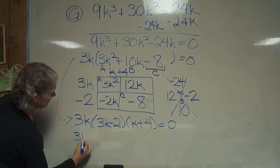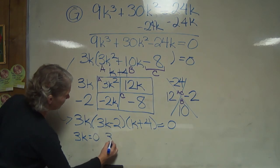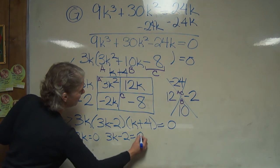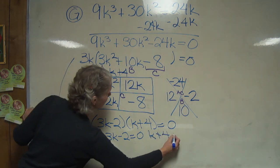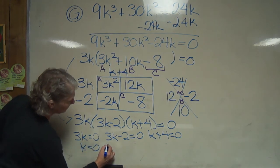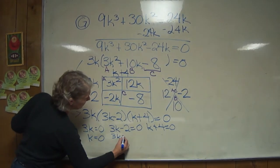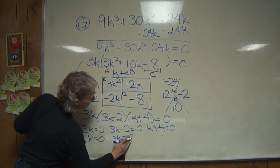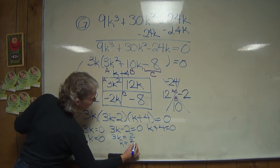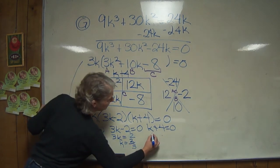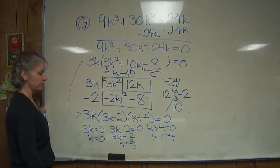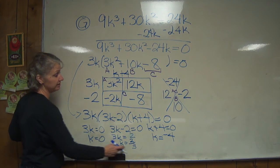So 3k = 0, 3k - 2 = 0, and k + 4 = 0. When we solve, here k = 0. 3k = positive 2, k = 2/3. And k = negative 4. And those are your 3 factors by doing one-step equations.